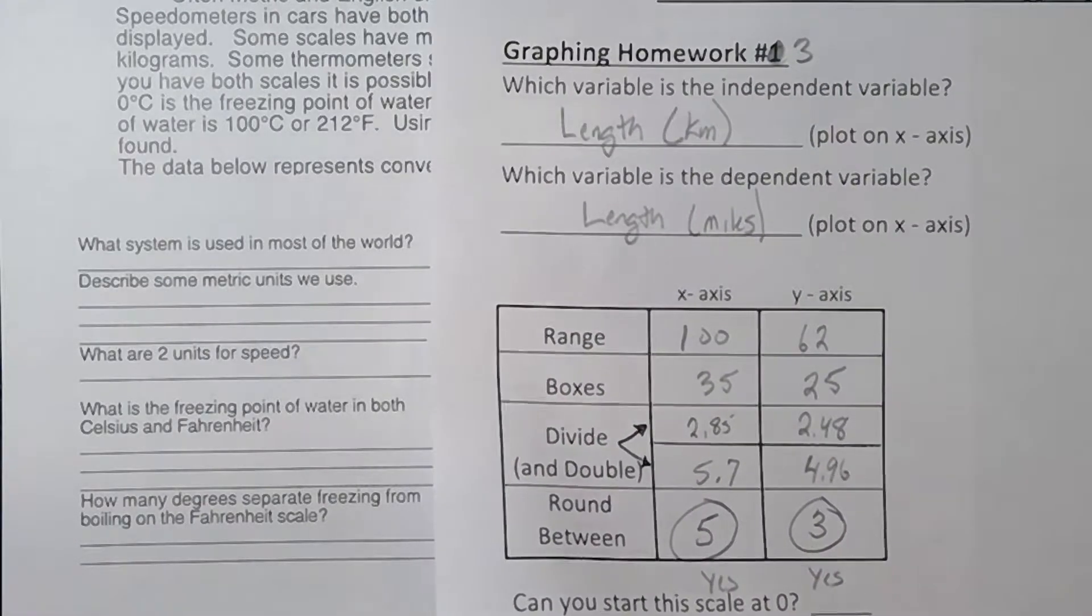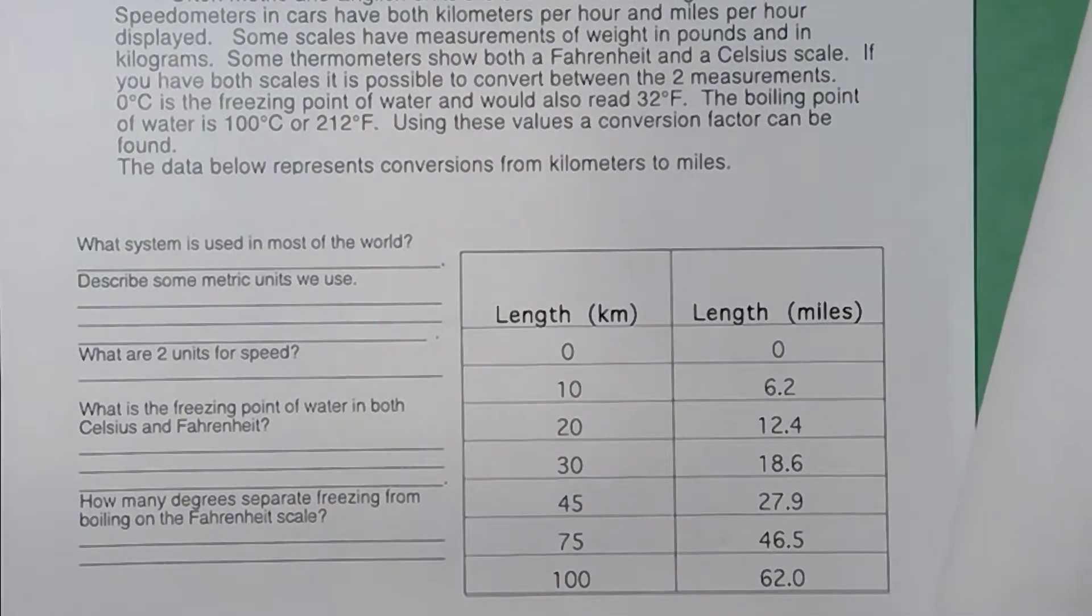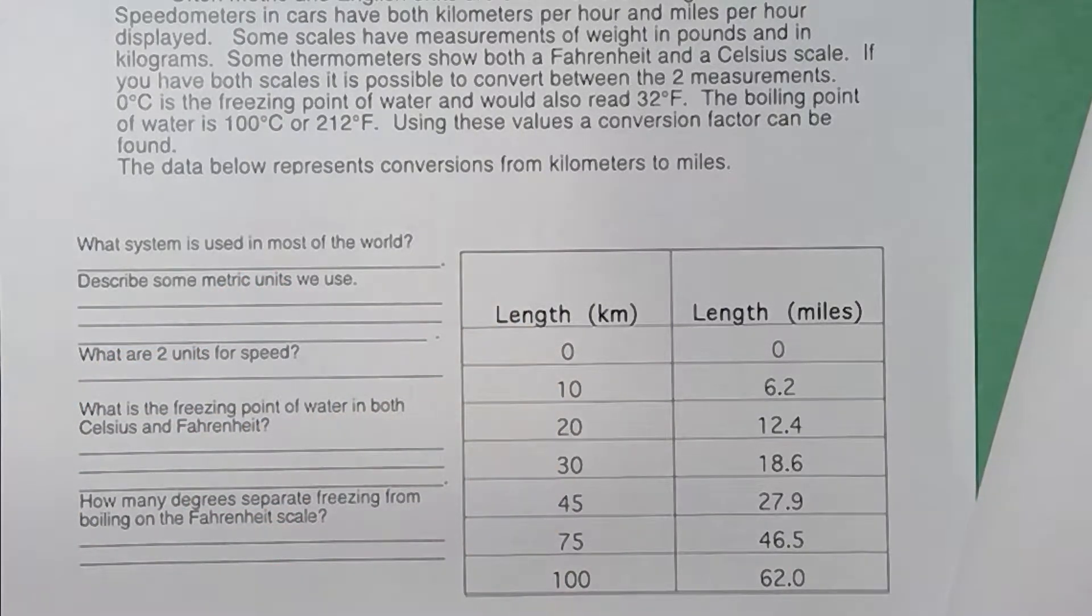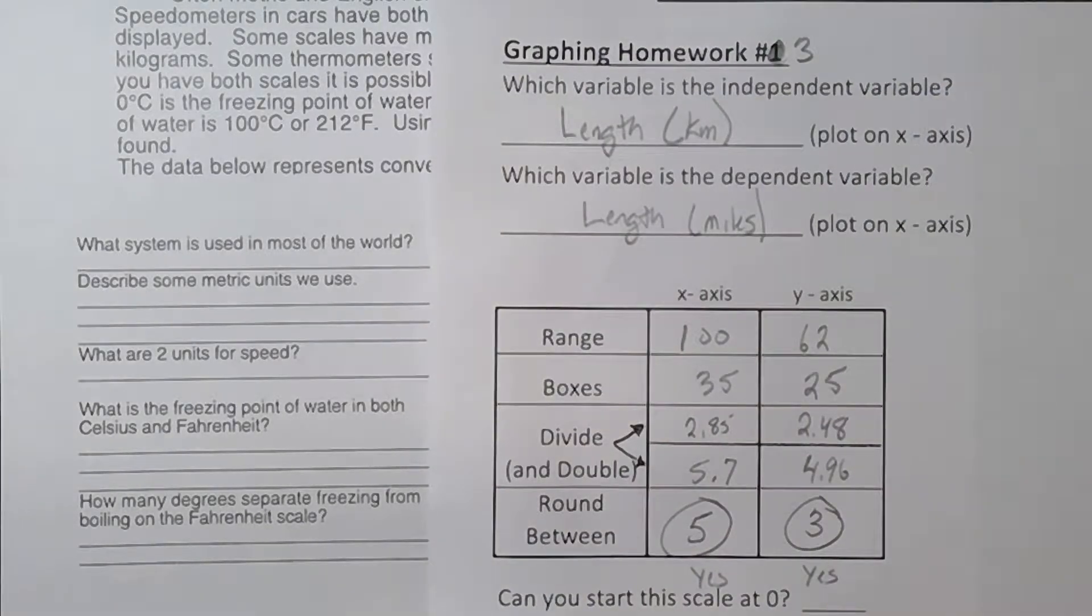The other thing is, if I look at my data, everything in kilometers is a multiple of five. The miles numbers, you only have two numbers, 0 and 62. They're all numbers, they're all decimals. So if I do this, I do 62 divided by 25.